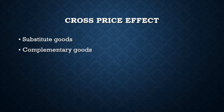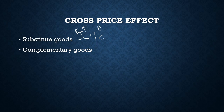Cross price effect — we will talk about substitute goods and complementary goods. For example, tea and coffee are substitute goods, which can be used in place of each other. If price of tea rises, people will prefer buying more coffee, so demand for coffee will increase. If price of tea decreases, people will buy tea only, hence demand for coffee will decrease.